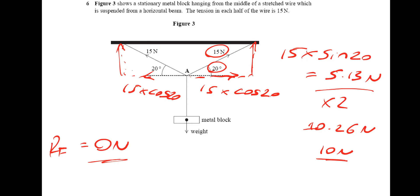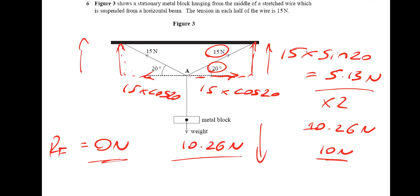As a bonus question: the weight of the metal block must also be 10.26 newtons, simply because the two forces pulling up must equal the force pulling down since the system is in equilibrium. When a system is in equilibrium, forces moving up must equal forces going down, and forces moving right must equal forces moving left. The two forces up are 10.26 newtons, so the weight of the metal block must be equivalent.